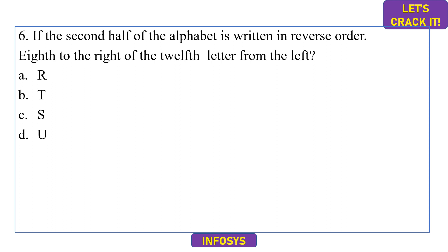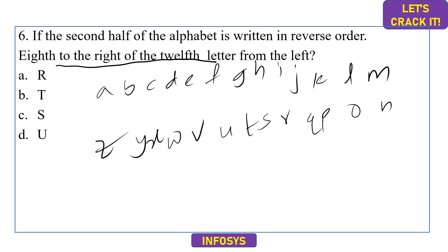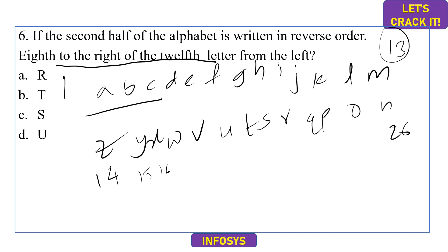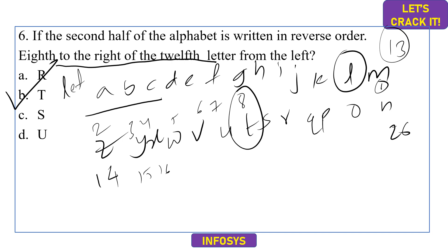The sixth question: the second half of the alphabet is written in reverse order. Find the 8th letter to the right of the 12th letter from the left. The first half goes A to M (positions 1–13); positions 14 onward are the second half written in reverse. The 12th letter from the left is L. Counting 8 positions to the right of L gives T. Option B is correct.